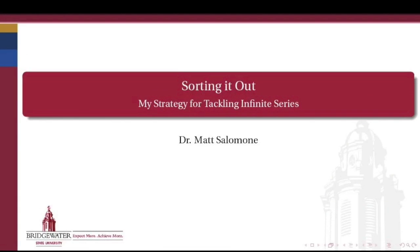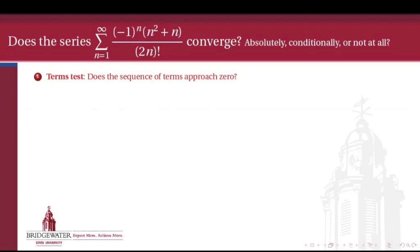In this video, we'll look at one complete example of how to use our sorting hat technique to assess whether an infinite series of real numbers is convergent or divergent. We're going to work on this example: the summation of negative 1 to the n times n squared plus n, all over the quantity 2n factorial. Is this series convergent absolutely, convergent conditionally, or divergent?